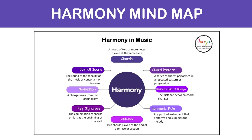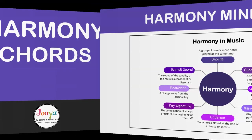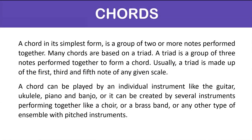The harmonic rate of change is the distance between chord changes. Harmonic role is any pitched instrument that performs and supports the melody. A cadence is two chords played at the end of a phrase or section. A chord in its simplest form is a group of two or more notes performed together. Many chords are based on a triad — a group of three notes performed together, usually made up of the first, third, and fifth note of any given scale. A chord can be played by an individual instrument like the guitar, ukulele, piano, and banjo, or it can be created by several instruments performing together like a choir, a brass band, or any other type of ensemble with pitched instruments.